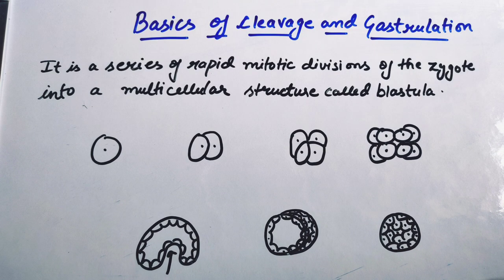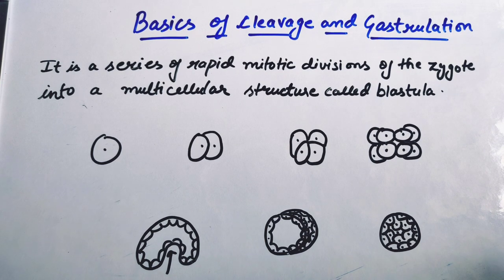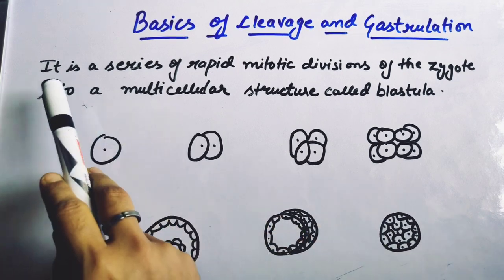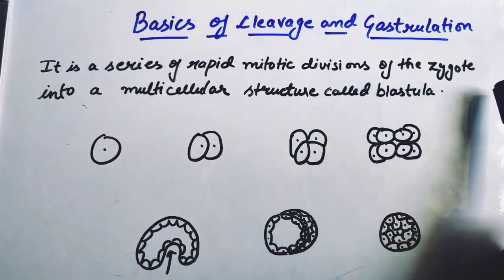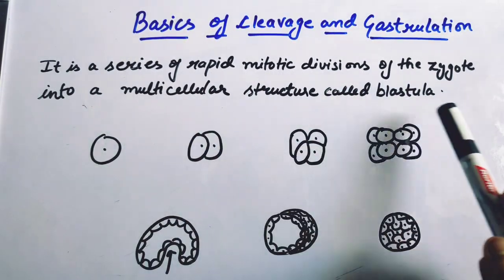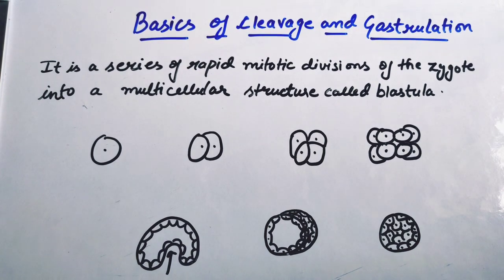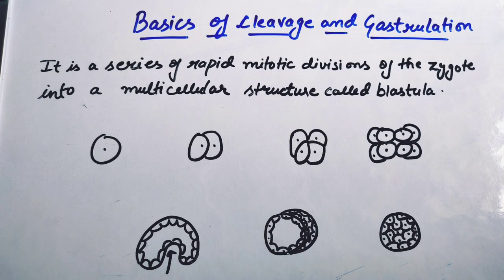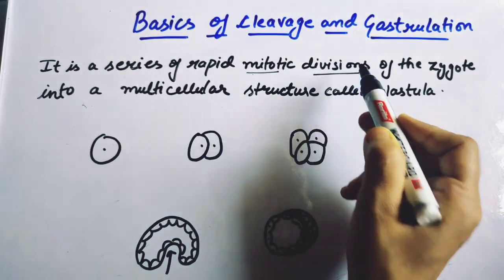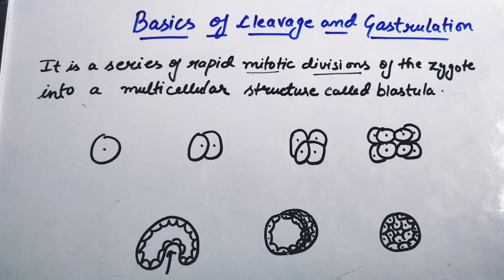First of all, we will see what the cleavage process is. We will study the definition: cleavage is a series of rapid mitotic divisions of the zygote into a multicellular structure. In the process of cleavage, there are rapid mitotic divisions.